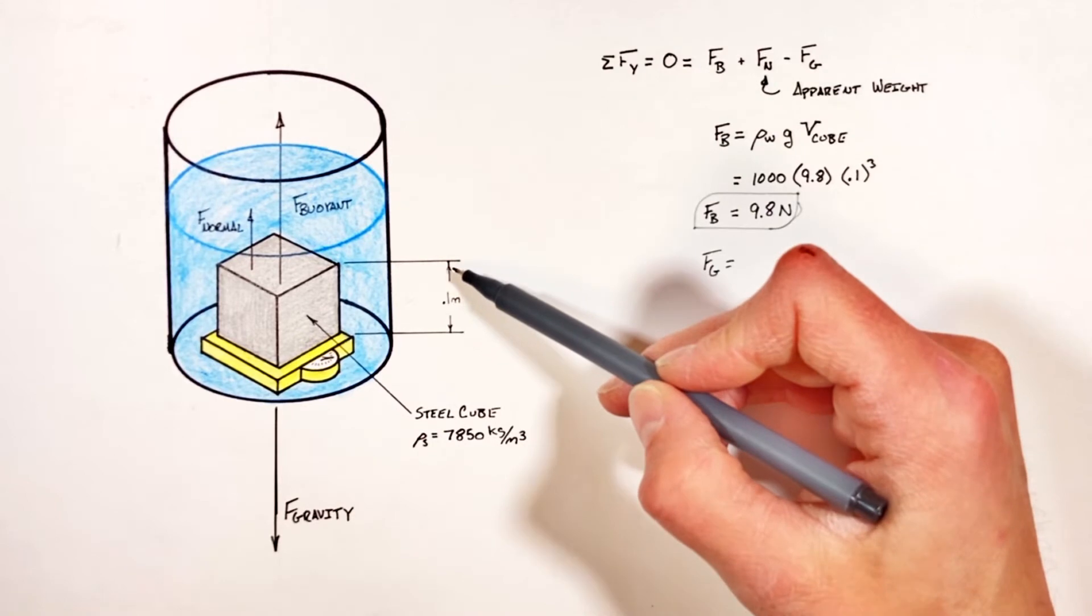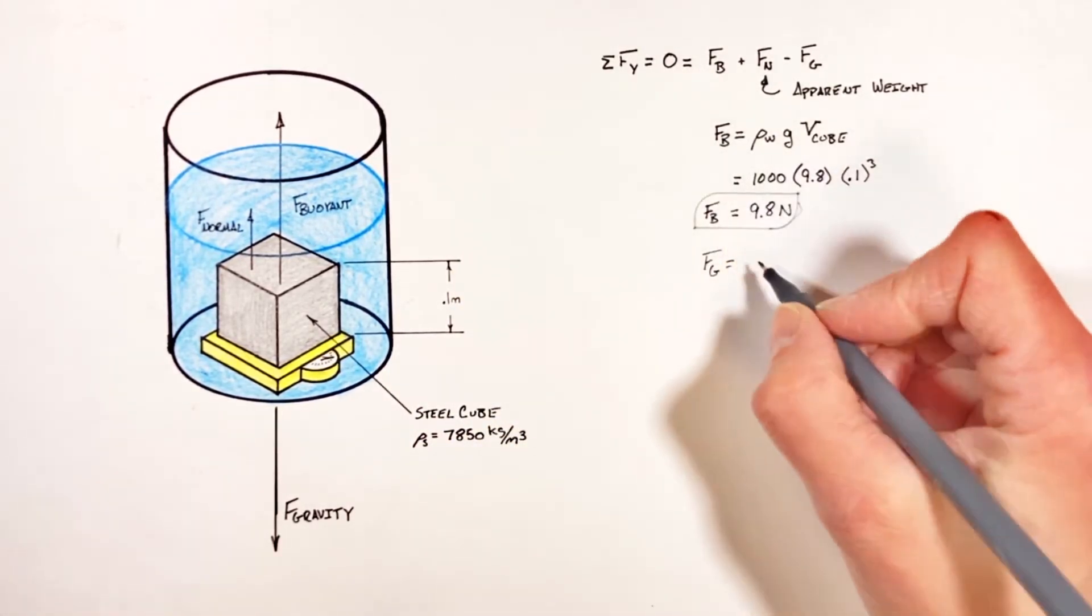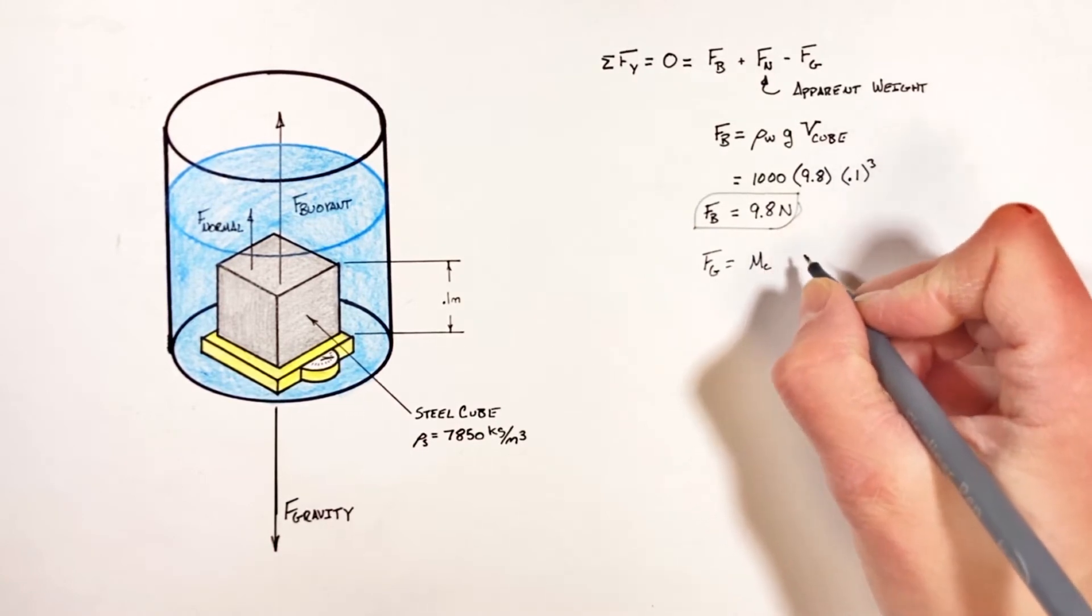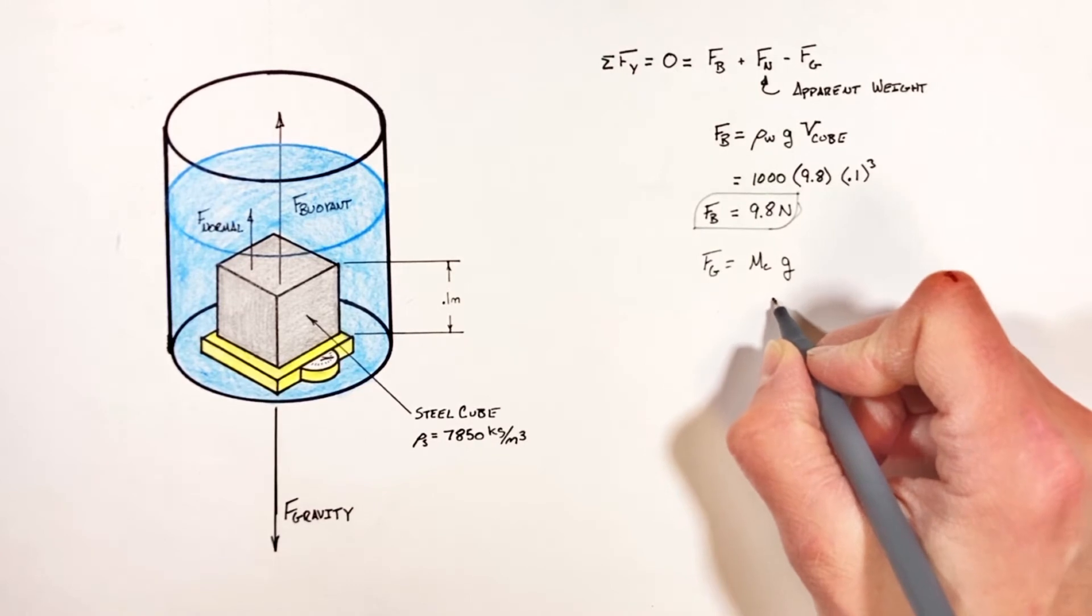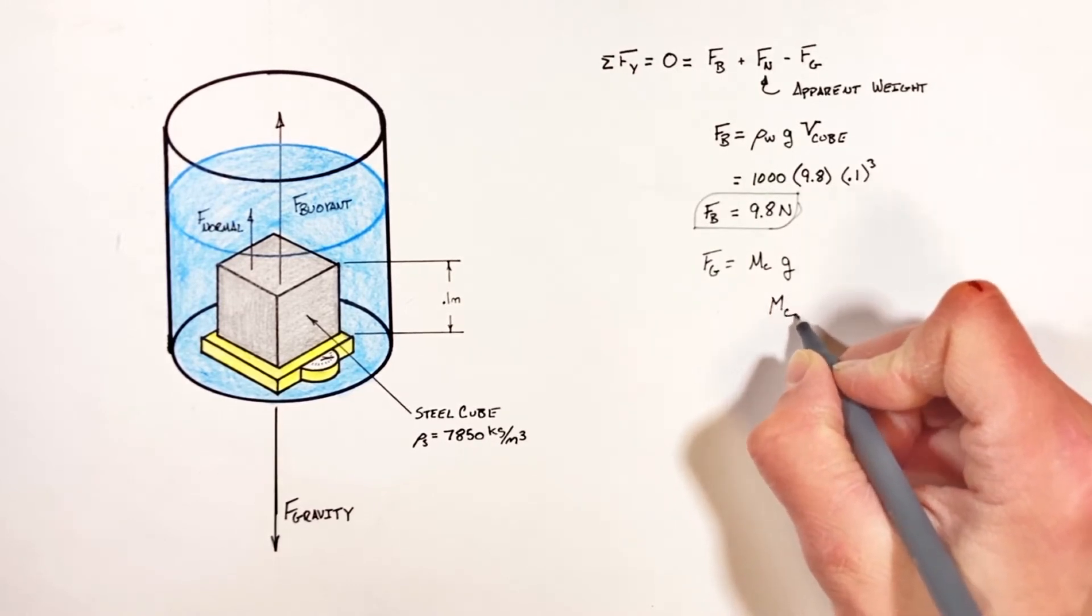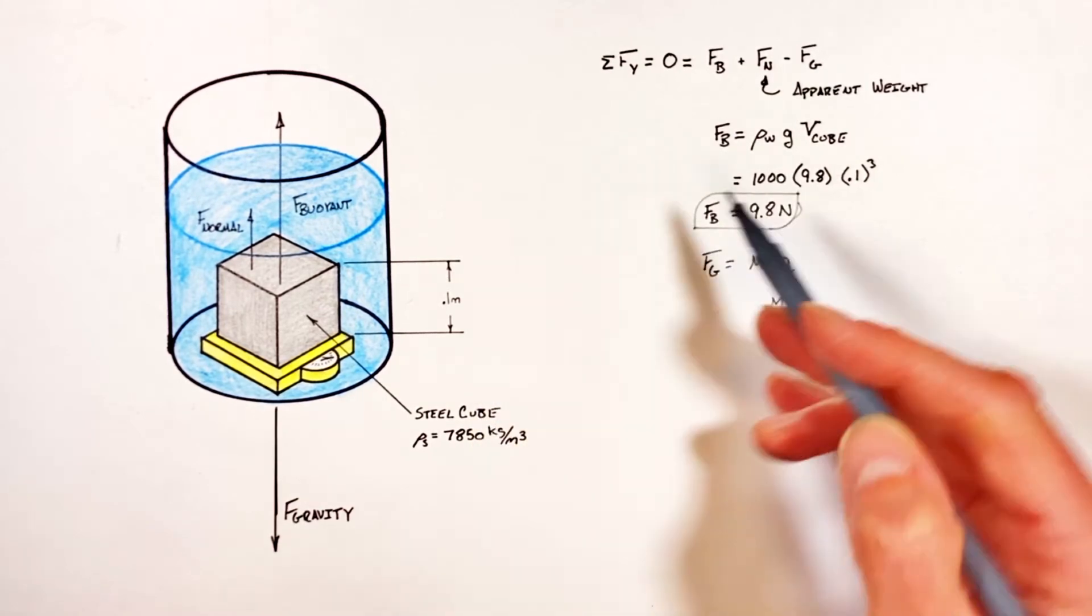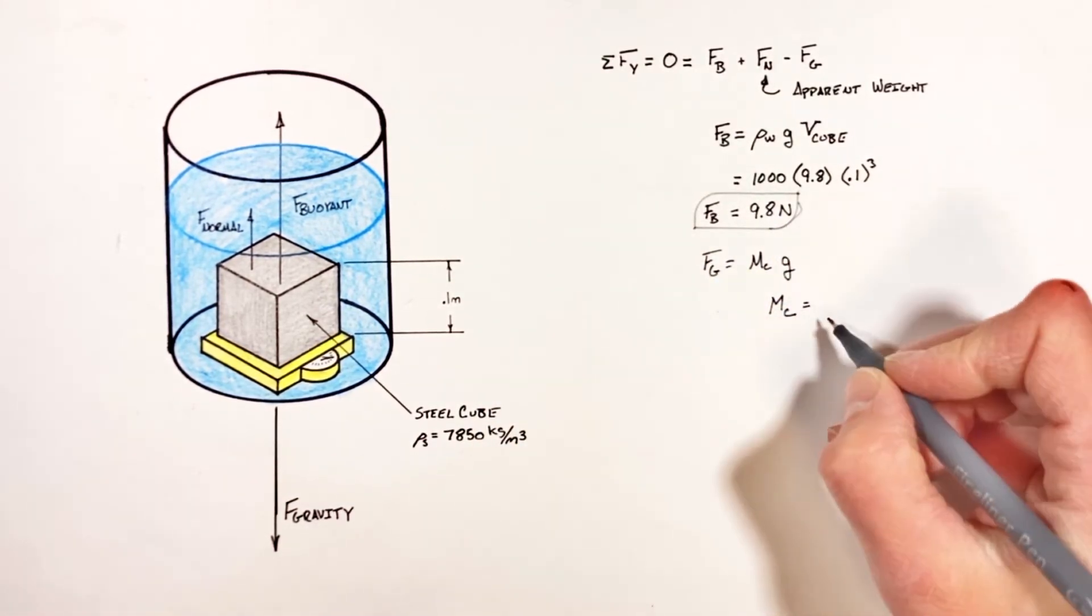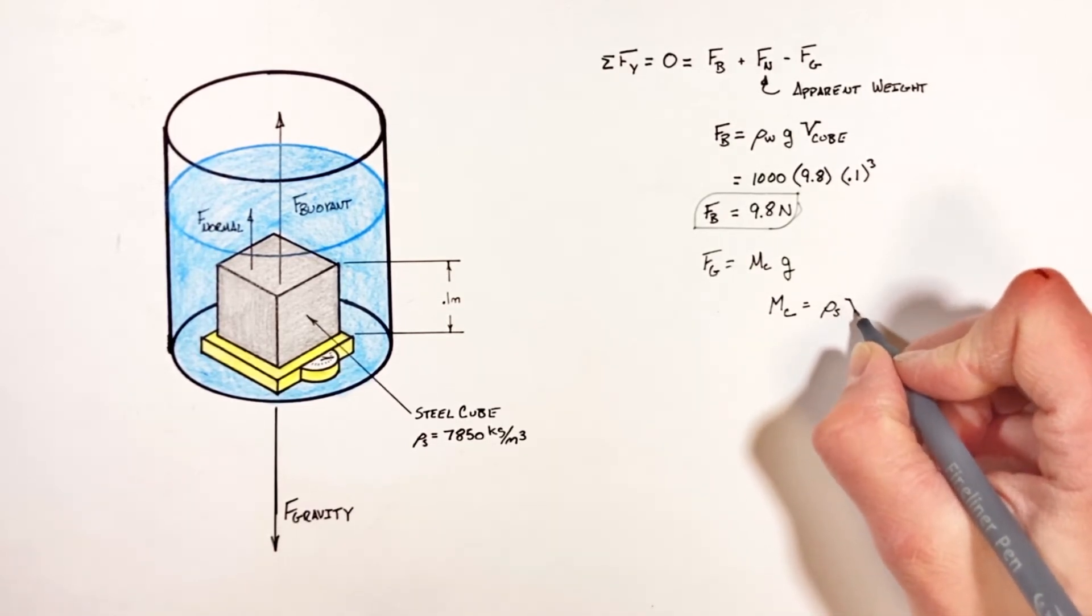Moving on to the force by gravity, we don't know the total mass of this cube, but we have been given the dimensions of the cube as well as its density. So if we could find the mass of the cube multiplied by g, that would give us the force by gravity. Now remember, the mass of the cube is going to be given by our equation for density, which is density of the steel multiplied by the volume of the cube.